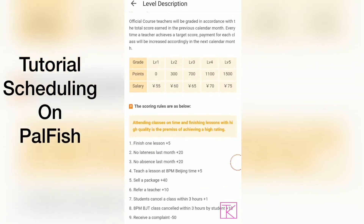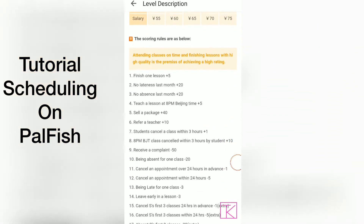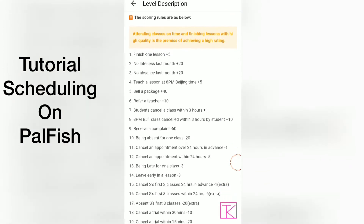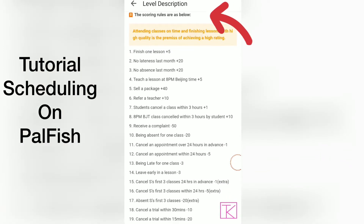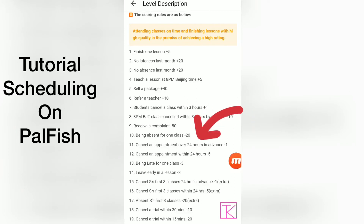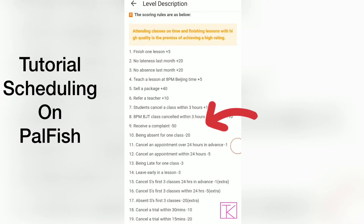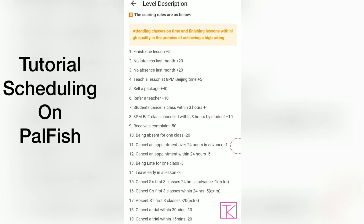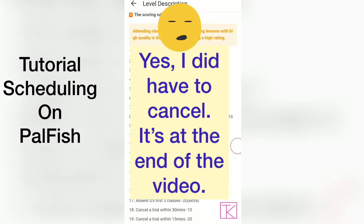Here are the scoring rules: cancelling an appointment over 24 hours is minus one point; cancelling an appointment within 24 hours is minus five points, which is equal to one class. If I wake up in the morning and have zero voice, I will have to cancel my four classes for tomorrow.